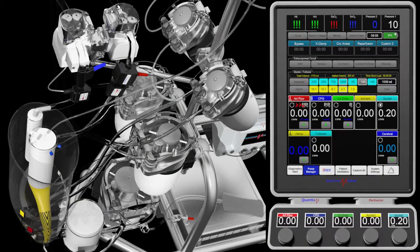Retrograde autologous priming includes several techniques, all of which utilize arterial blood to slowly displace priming fluid from the main line to decrease hemodilution.